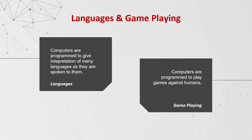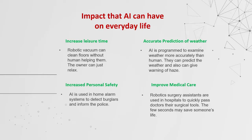Languages and game playing. Computers are programmed to give interpretation of many languages as they are spoken to them. In game playing, computers are programmed to play games against humans. Impacts that AI can have on everyday life: first, increase leisure time — robotic vacuums can clean floors without human help. Second, accurate prediction of weather — AI can examine weather more accurately than humans and give warnings of hazards. Third, increase personal safety — AI is used in home systems to detect burglars and inform the police. Finally, improve medical care — robotic surgery assistants are used in hospitals to quickly pass doctors their surgical tools, and those few seconds may save someone's life.